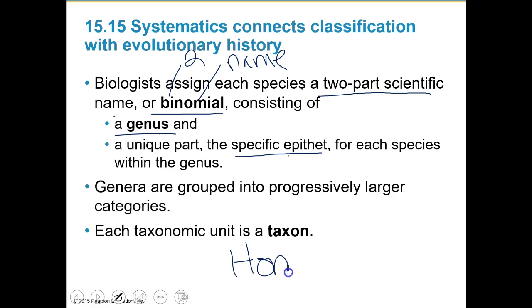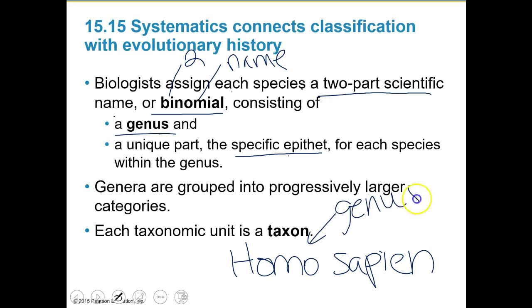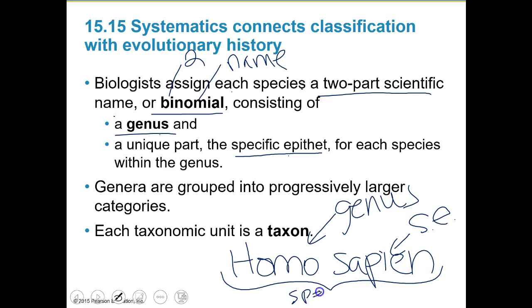For example, Homo sapiens as a human: Homo is the genus, and sapiens is the specific epithet. Those together make up the species name. For a species to have a name, it has to have both a first and a last name. It's kind of like how we do it - if I just went by Kelly, that's too common. But if I say Royce, that specifies me exactly. So genus plus specific epithet equals species. Each taxonomic unit we call a taxon.